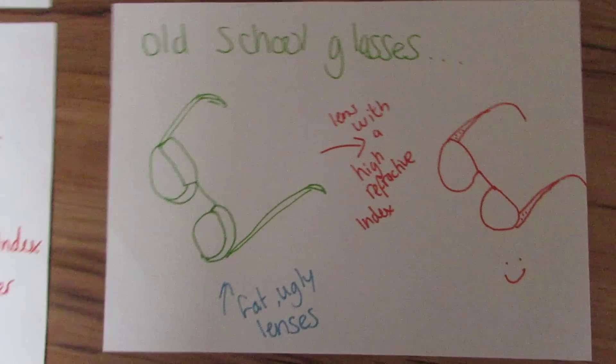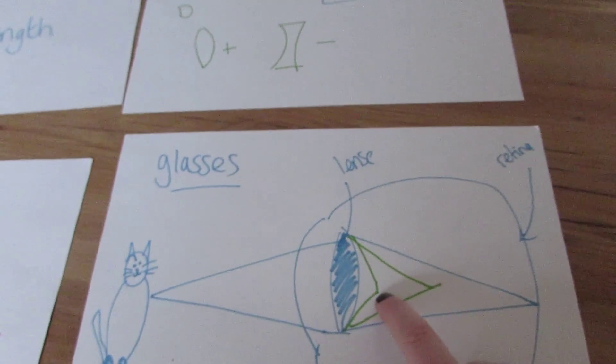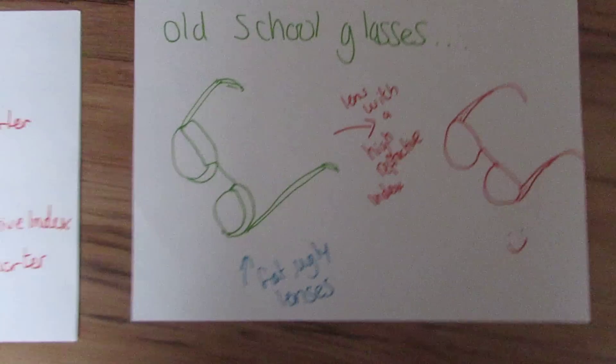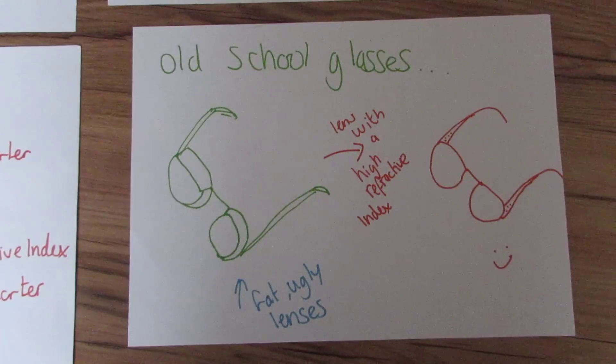So what does this mean in practice? It means that if you need really strong lenses, because your image is focusing here, not here, you used to have to wear big, fat, thick, ugly glasses.